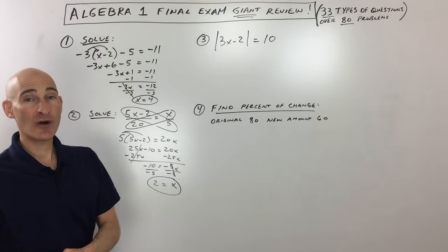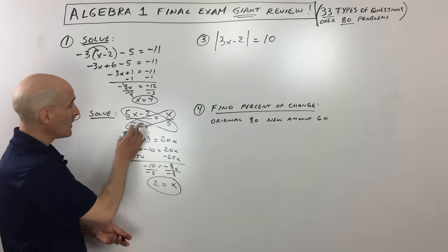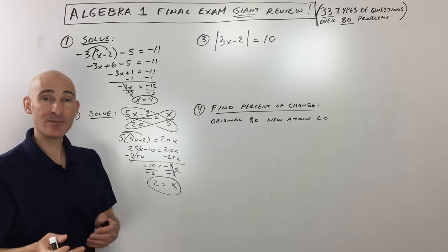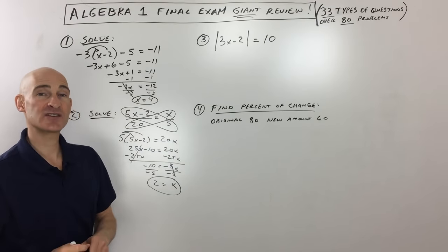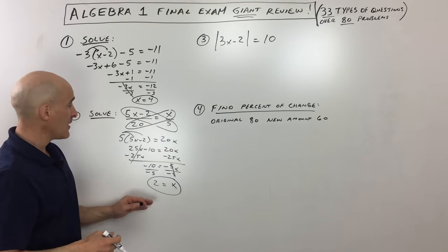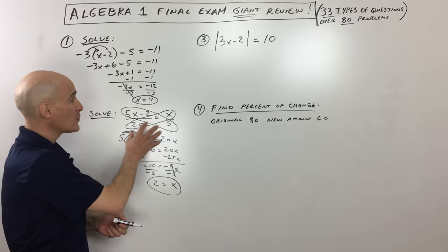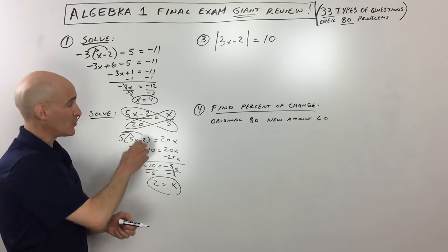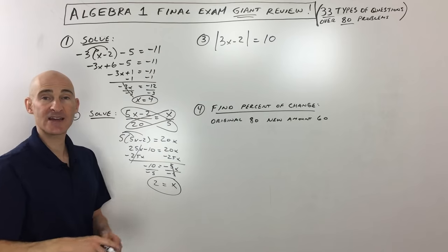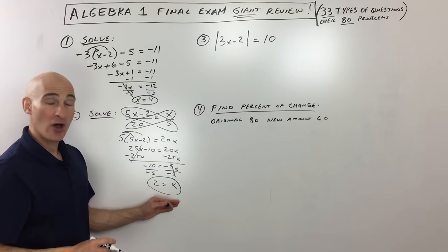The nice thing about algebra is you can check your answer by putting the value 2 back into the original problem wherever you see x and making sure both sides equal each other. The topic being tested here is working with proportions — a ratio equal to a ratio — using the cross-product technique to solve.